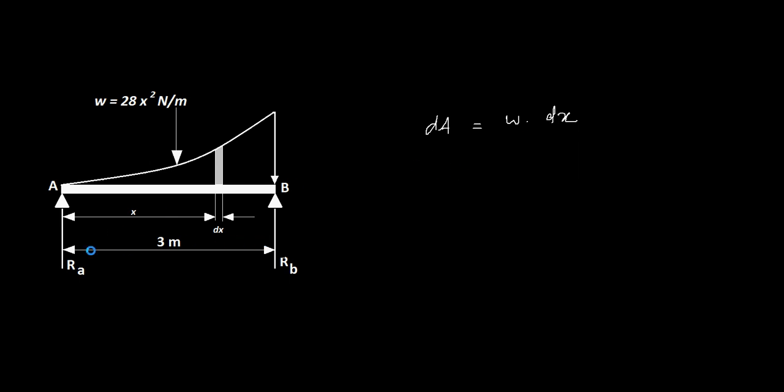The total distance is 3 meters. So integral of dA from 0 to 3 is equal to integral from 0 to 3 of 28x² dx. That is equal to 28 into x³/3, within limits 0 to 3.